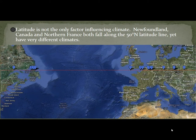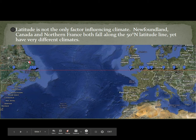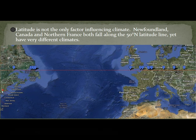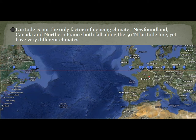Latitude is not the only factor influencing climate. For example, Newfoundland, Canada — up here — and northern France are both close to the 50 degree north latitude line, yet have very different climates.